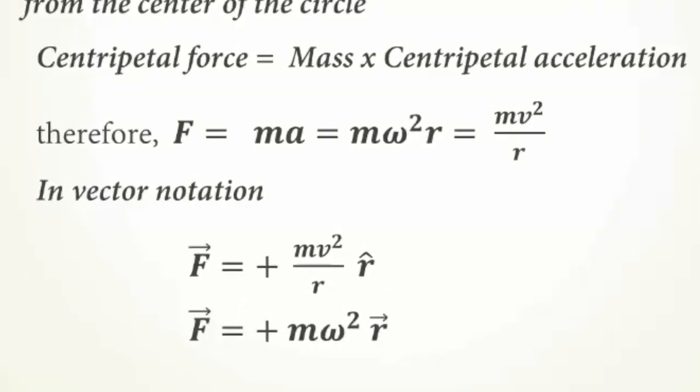Its formula is given as m omega square r or mv square upon r. In vector notation, it is given as plus m omega square r vector. That is, this is in the direction of the radius vector of the circle.